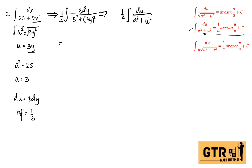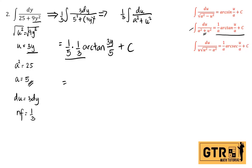Applying the direct formula, the answer is one-third times (1/a) arctan(u/a), where a equals 5 and u equals 3y. That gives one-third times one-fifth times arctan(3y/5) + c. Simplifying, the final answer is (1/15) arctan(3y/5) + c.